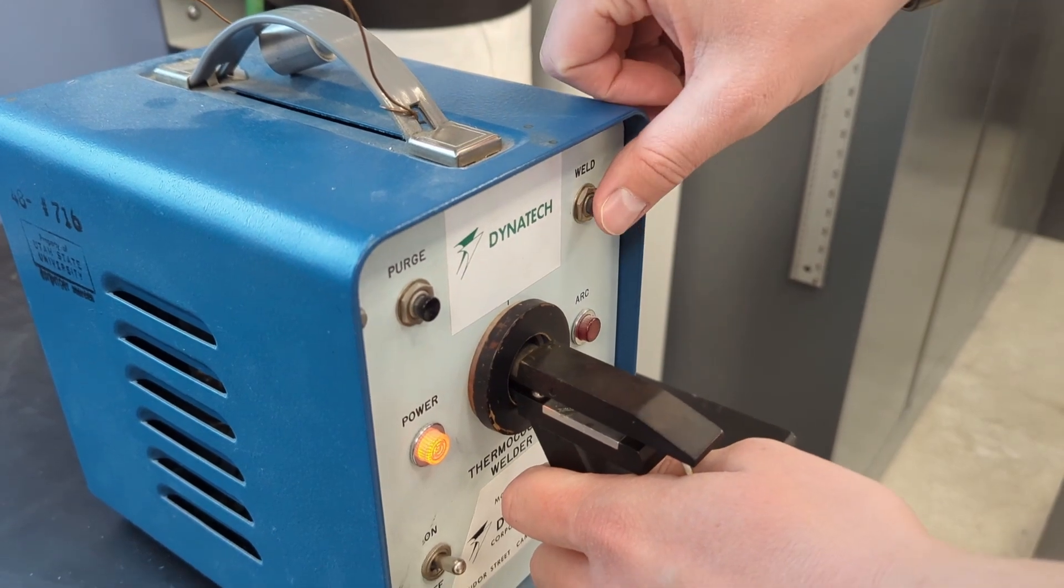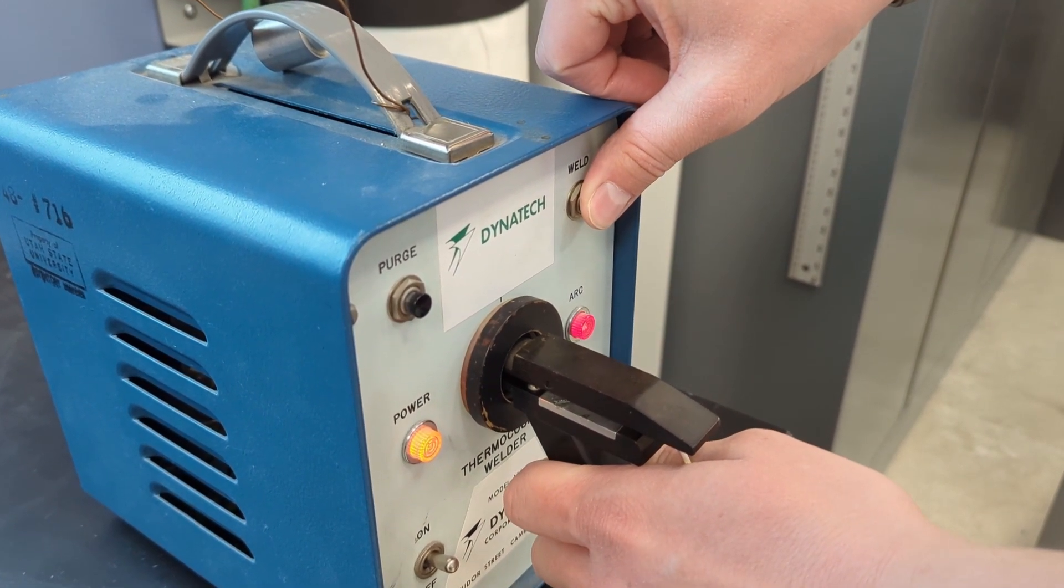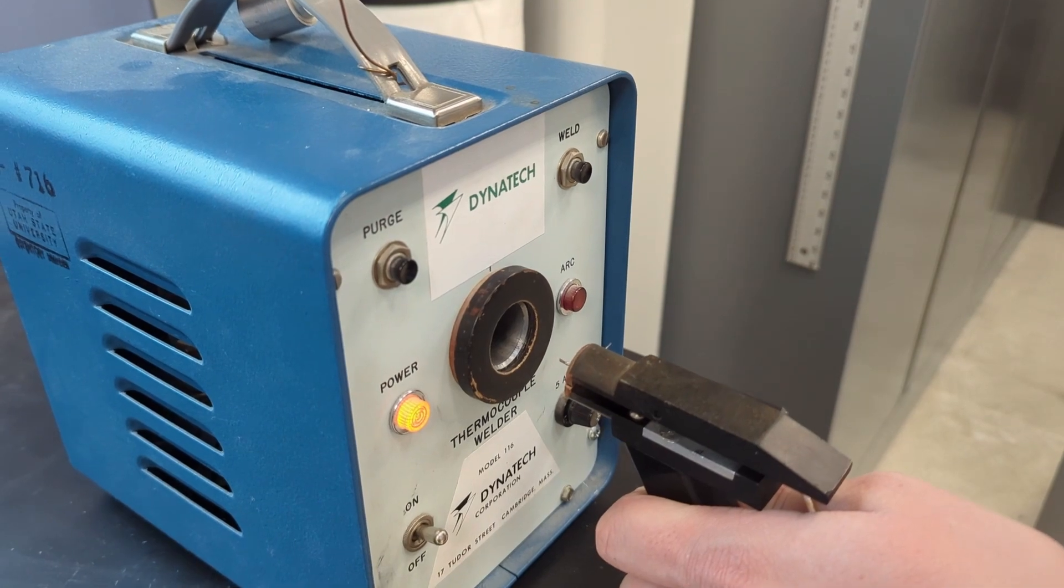If the weld is unsuccessful, readjust the wire in the clamp and wait one minute to allow the welder to recharge prior to another attempt.